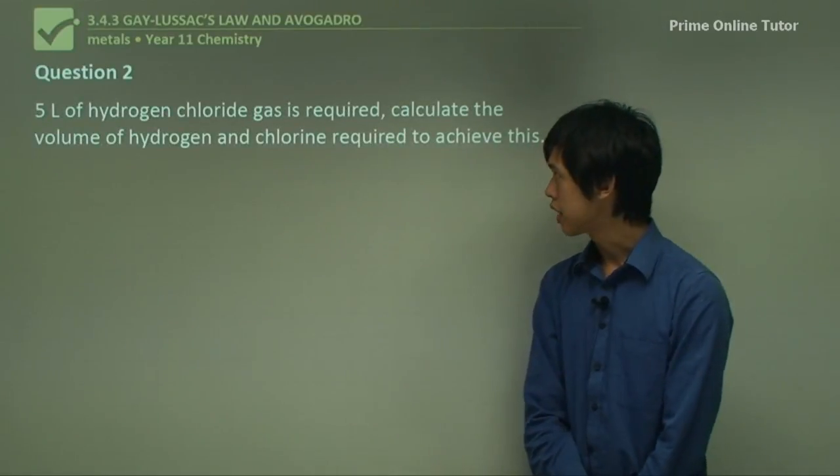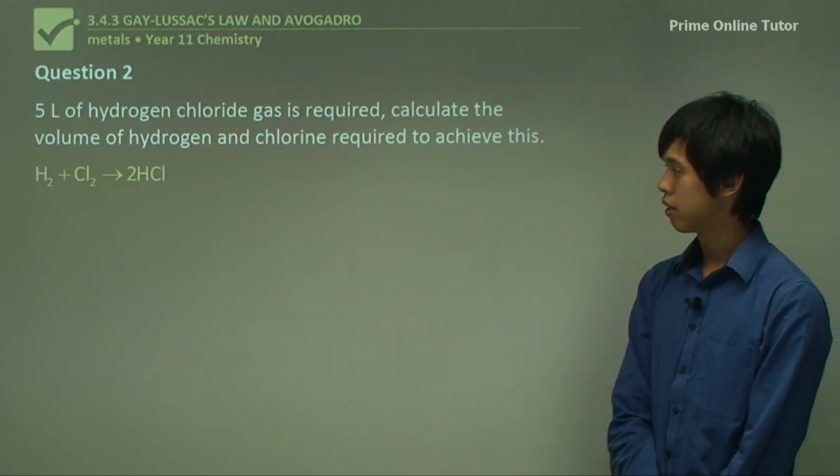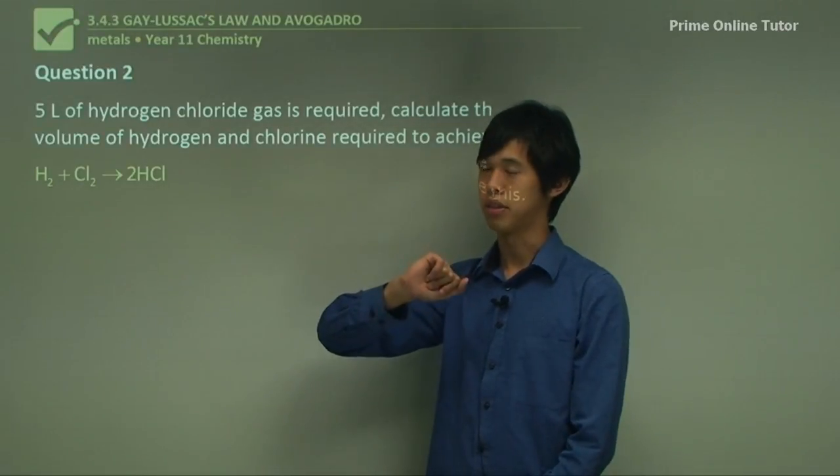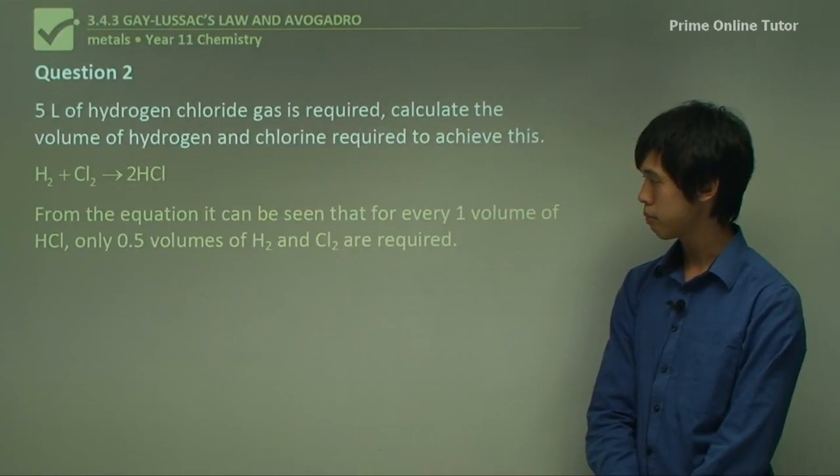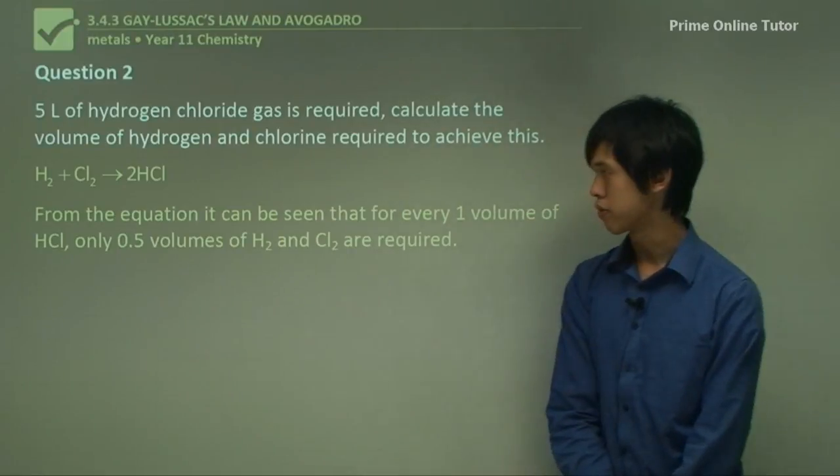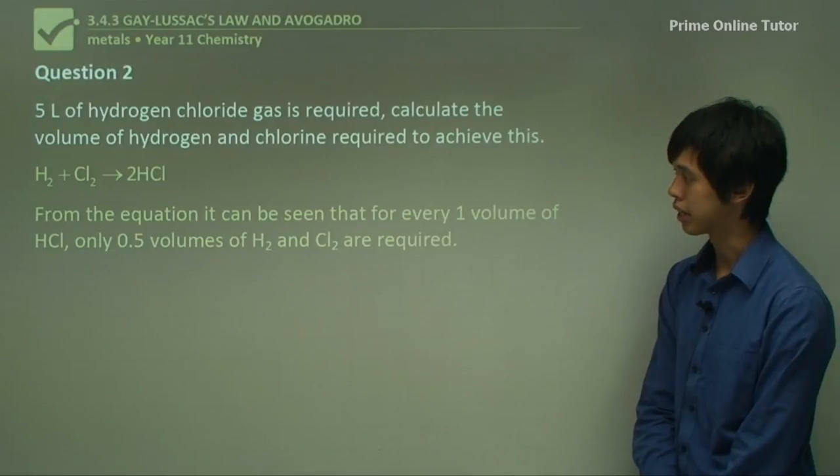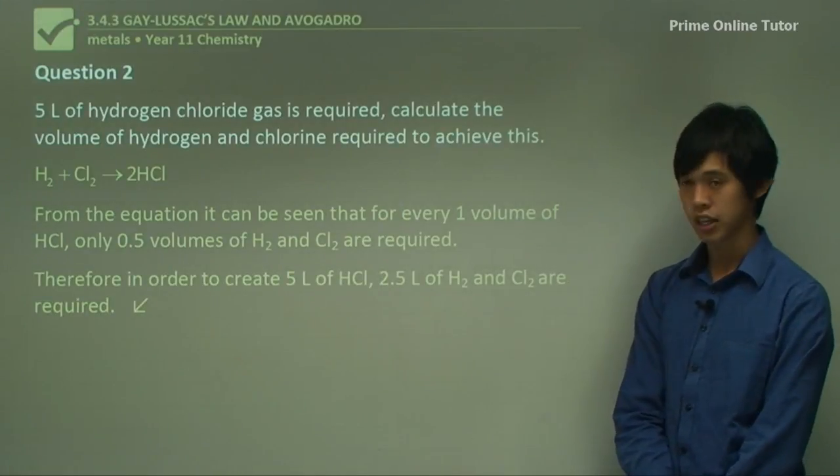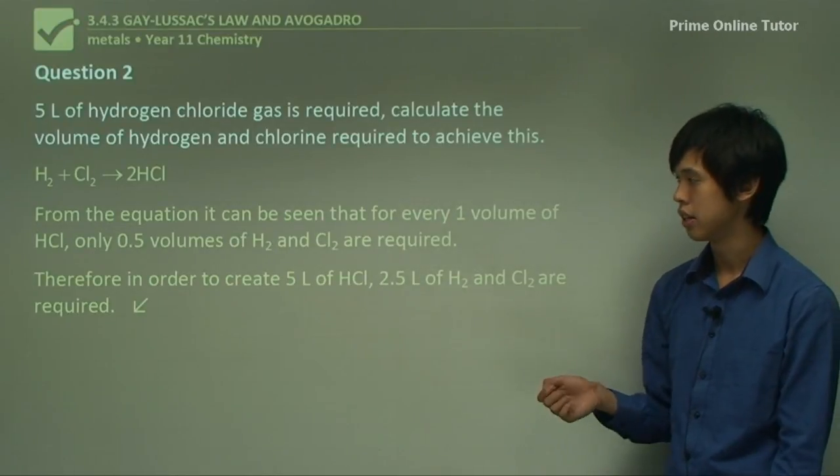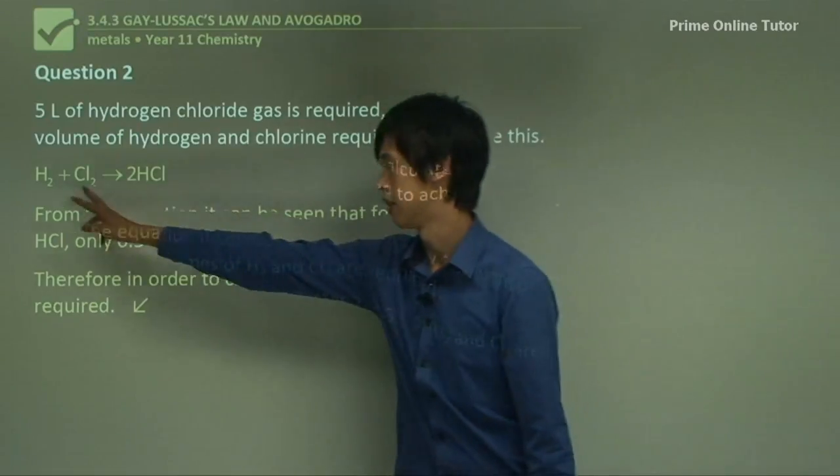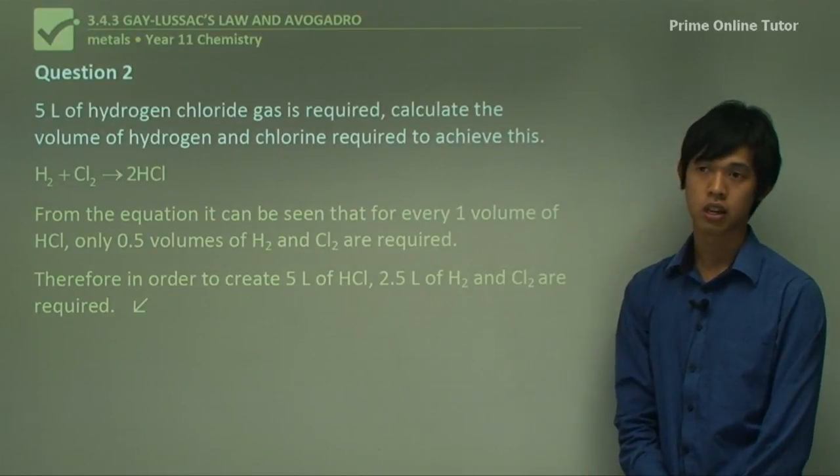So 5 liters of hydrogen chloride gas is required. Calculate the volume of hydrogen and chlorine required to achieve this. Well first we've got to start with our chemical equation. H2 plus Cl2 gives you 2HCl. From the equation it can be seen that for every one volume of HCl, only 0.5 volumes of H2 and Cl2 are required. Therefore in order to create 5 liters of HCl, all we need is 2.5 liters of H2 and 2.5 liters of Cl2. So we only need half the amount of volume for each one. And that gives us 5 liters of our HCl gas.